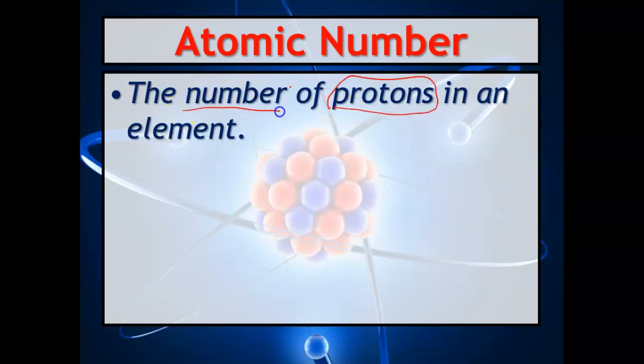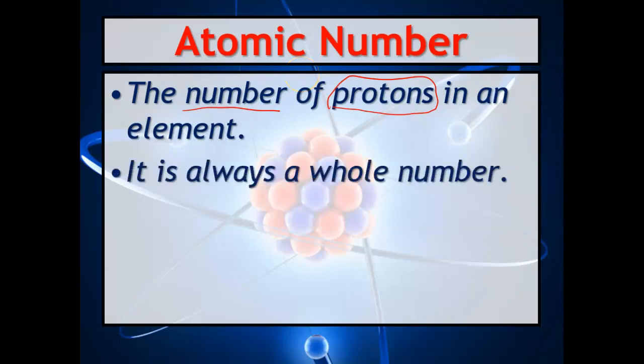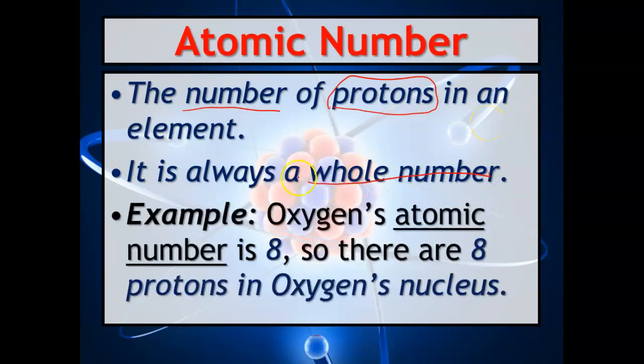It is the number of protons in an element. It does not change. It is always a whole number. So when oxygen's atomic number is 8, not 8.2, not 15.99, but 8. So there are 8 protons in oxygen's nucleus.